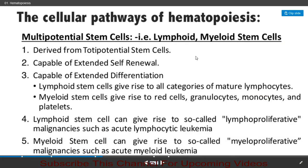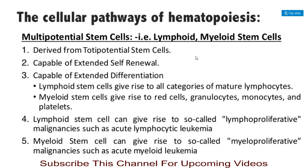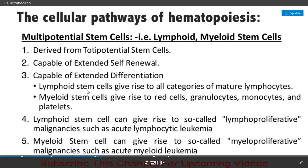The second type is multipotent stem cells, which includes lymphoid stem cells and myeloid stem cells. These multipotent stem cells are derived from totipotent stem cells. They are capable of extended self-renewal and extended differentiation. For example, lymphoid multipotent stem cells can give rise to all categories of mature lymphocytes.